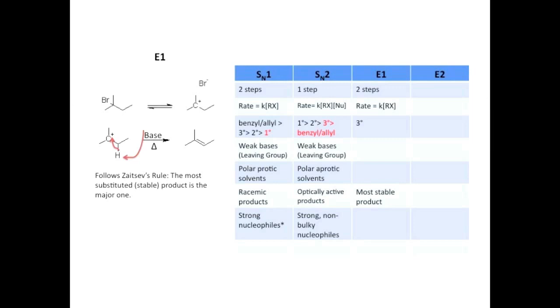Remember, whenever a carbocation is formed, rearrangement is always a possibility, so just watch out for that. As far as the class of carbon at which E1 happens, it's pretty much just tertiary. It can happen at secondary, but on the MCAT, pretty much just expect tertiary. There's no overlap at secondary carbons like with SN1 and SN2.